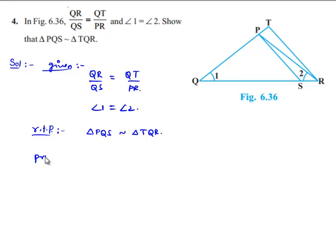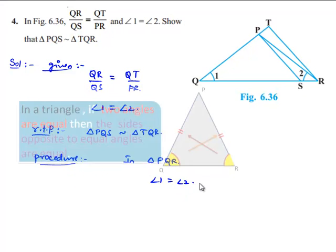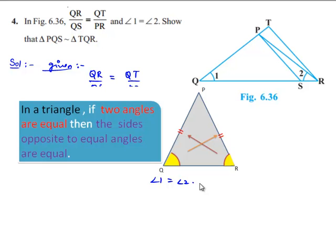Now moving on to the procedure. If we consider triangle PQR, angle 1 is equal to angle 2. We know that in a triangle, the sides opposite to equal angles are equal. So we can say PQ is equal to PR here.